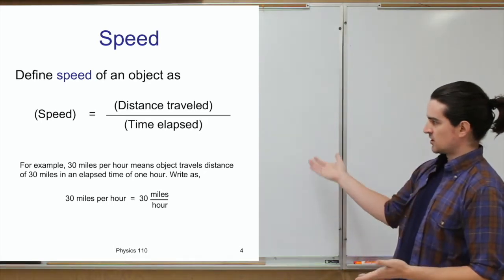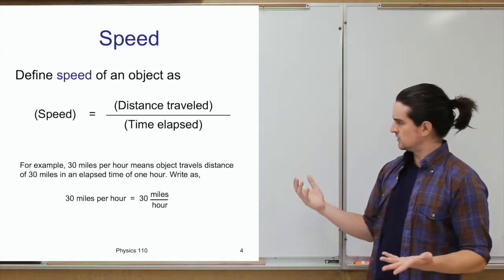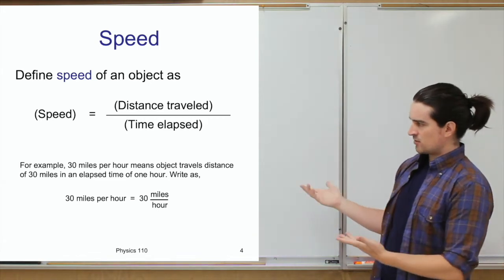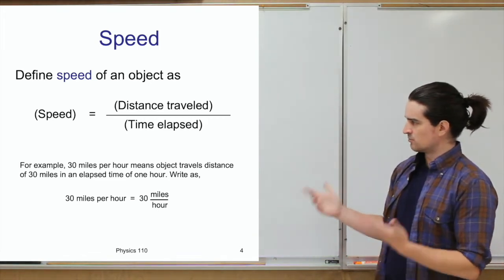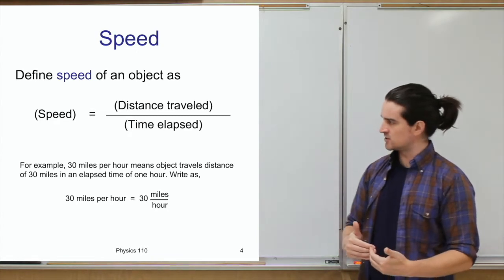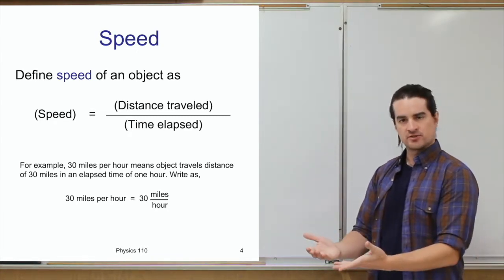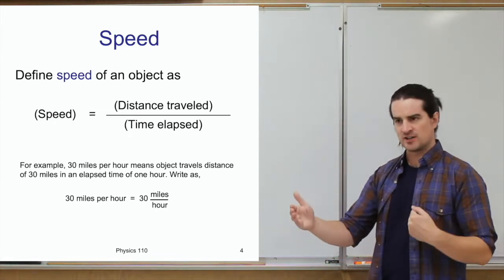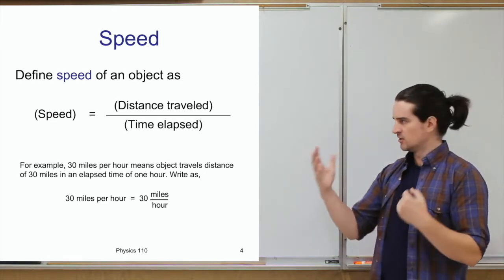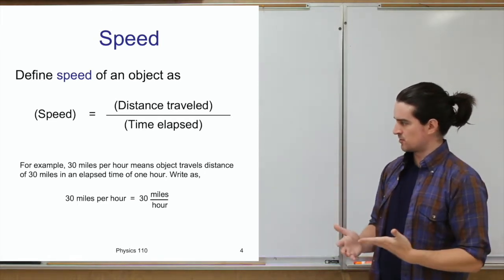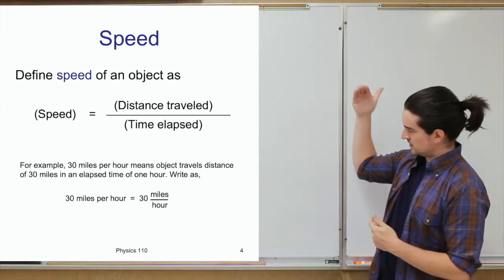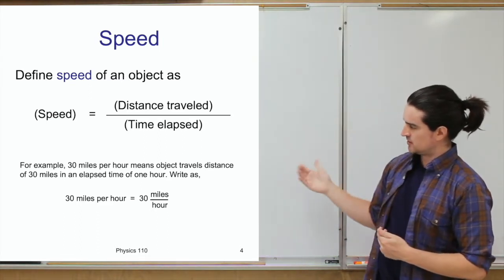For instance, if a car is traveling 30 miles per hour, what you're really saying is that if it were to travel for an hour at that speed, it would go 30 miles. Or if it goes 30 miles at that speed, it will take an hour. These are all ways of saying the speed is 30 miles per hour — a distance over a time measurement.